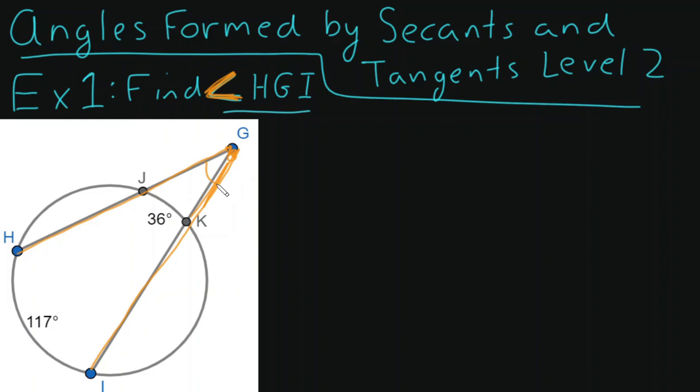So I want to find angle HGI. The next thing that I want to do is figure out what kind of vertex is this. Is this a vertex that is inside, on, or outside the circle? And I think it's very apparent that this is what we call a vertex that is outside the circle.